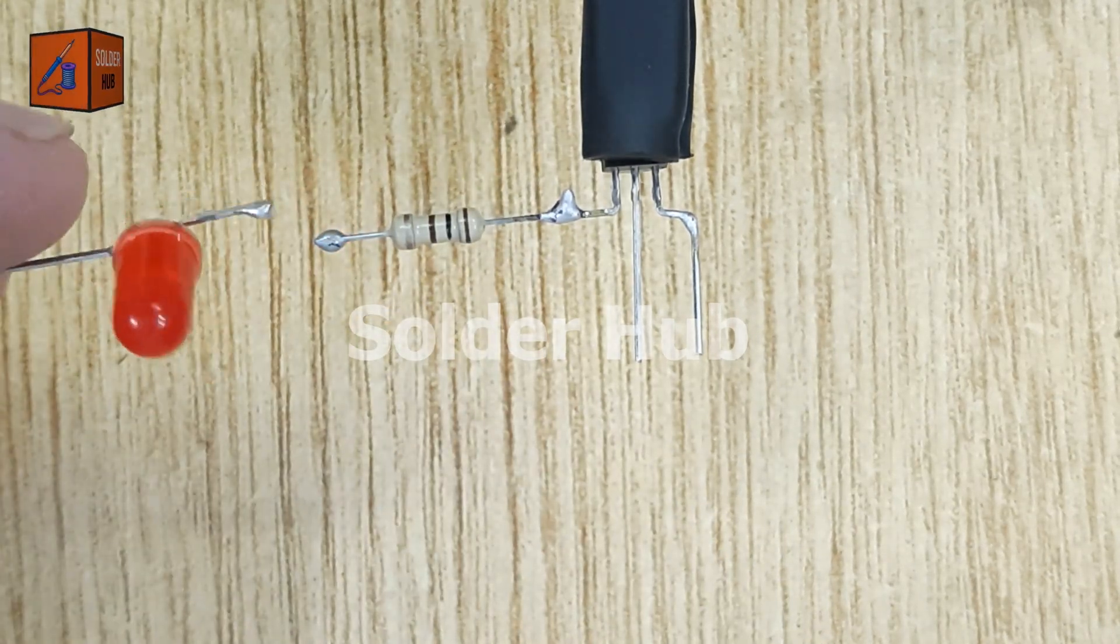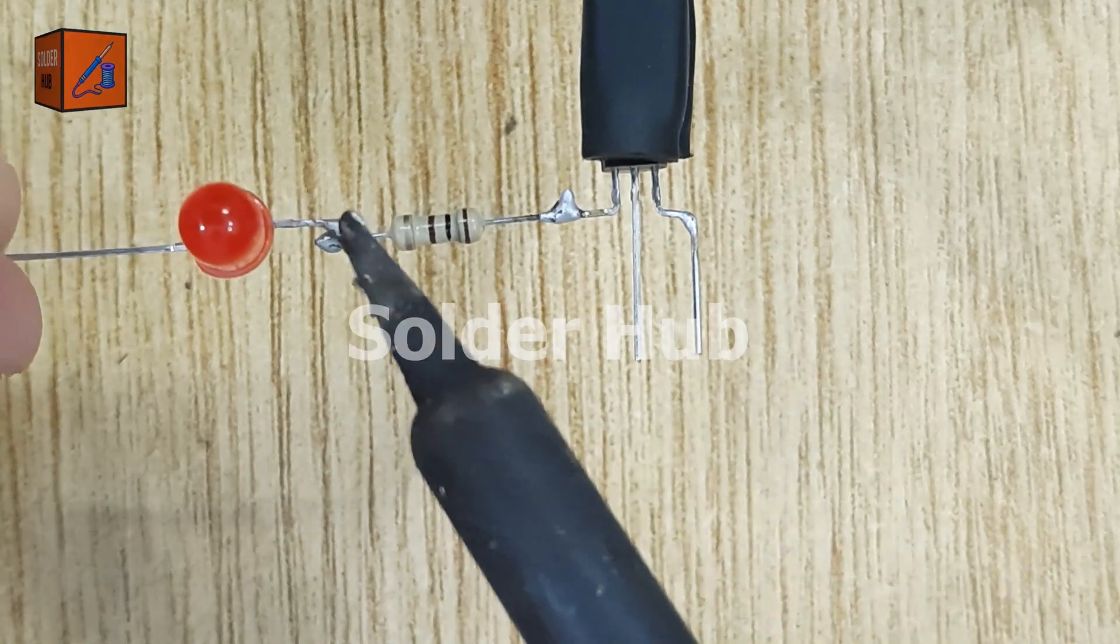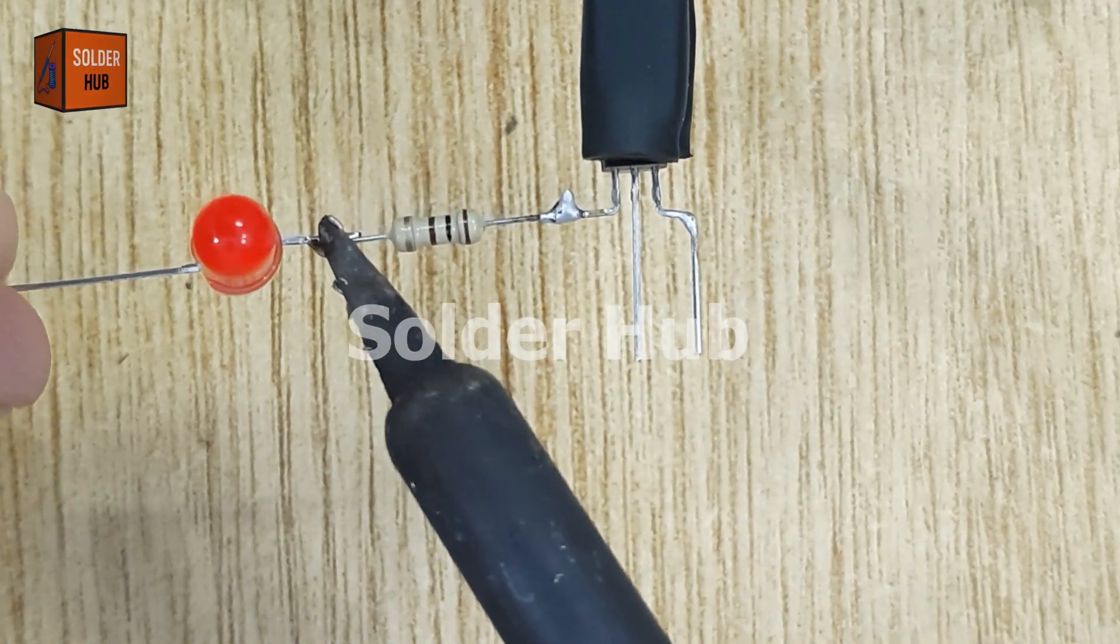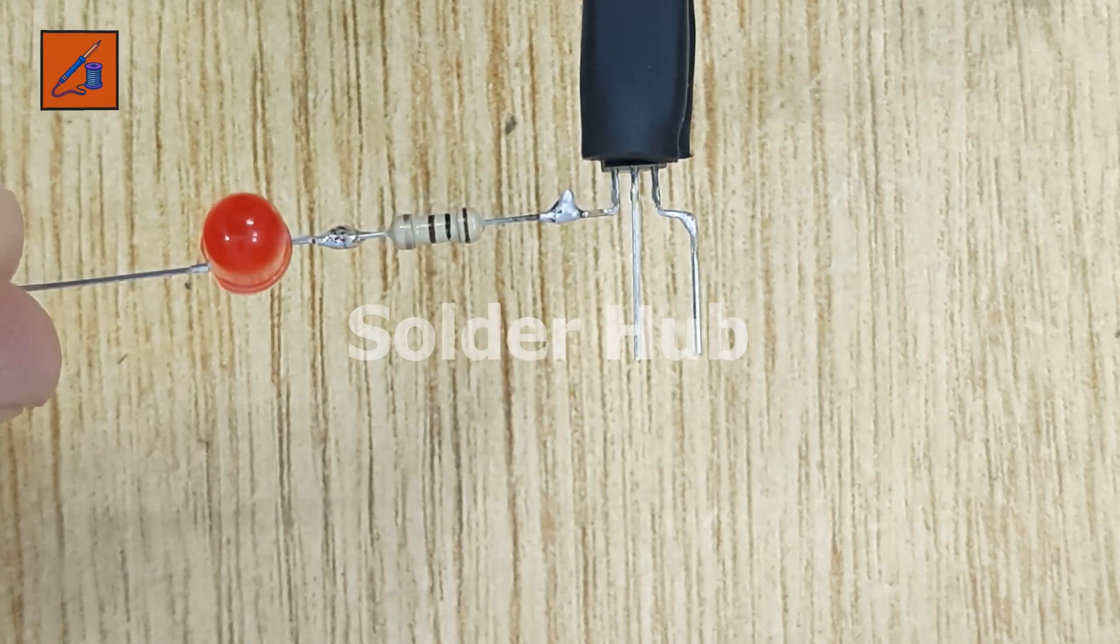Then, I connect the two by soldering the LED's positive pin to the resistor. This completes the path between the collector and the LED.